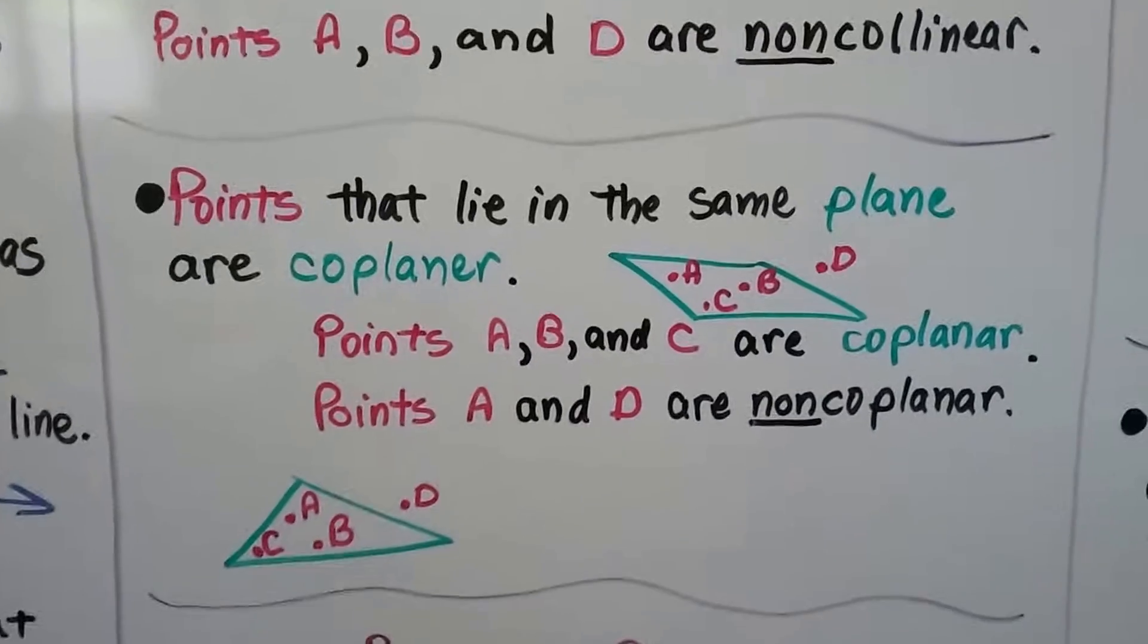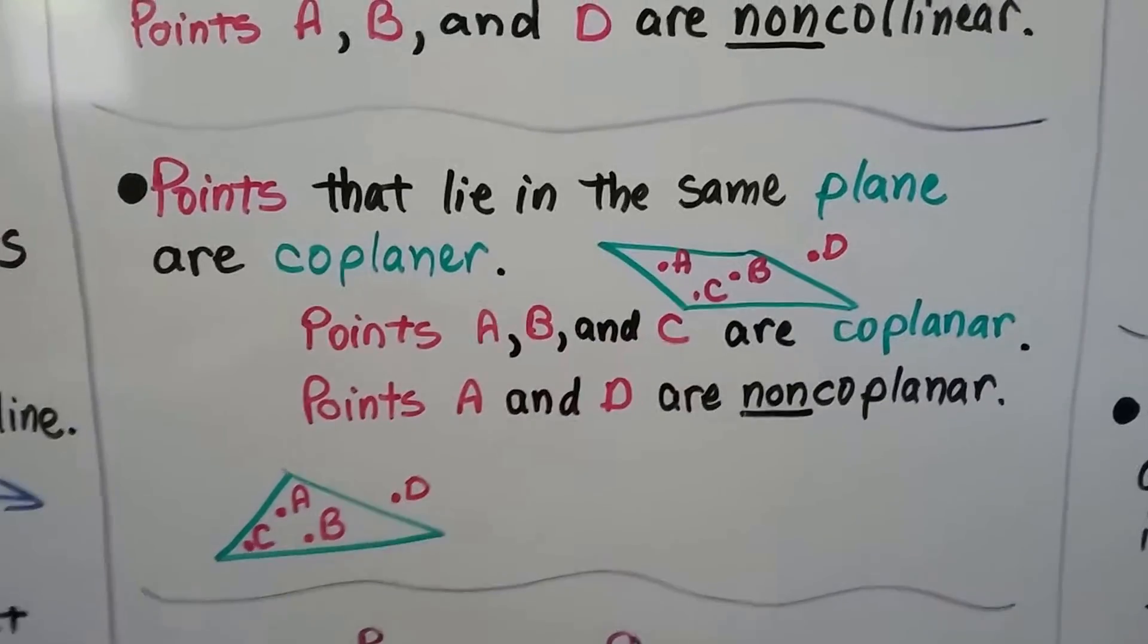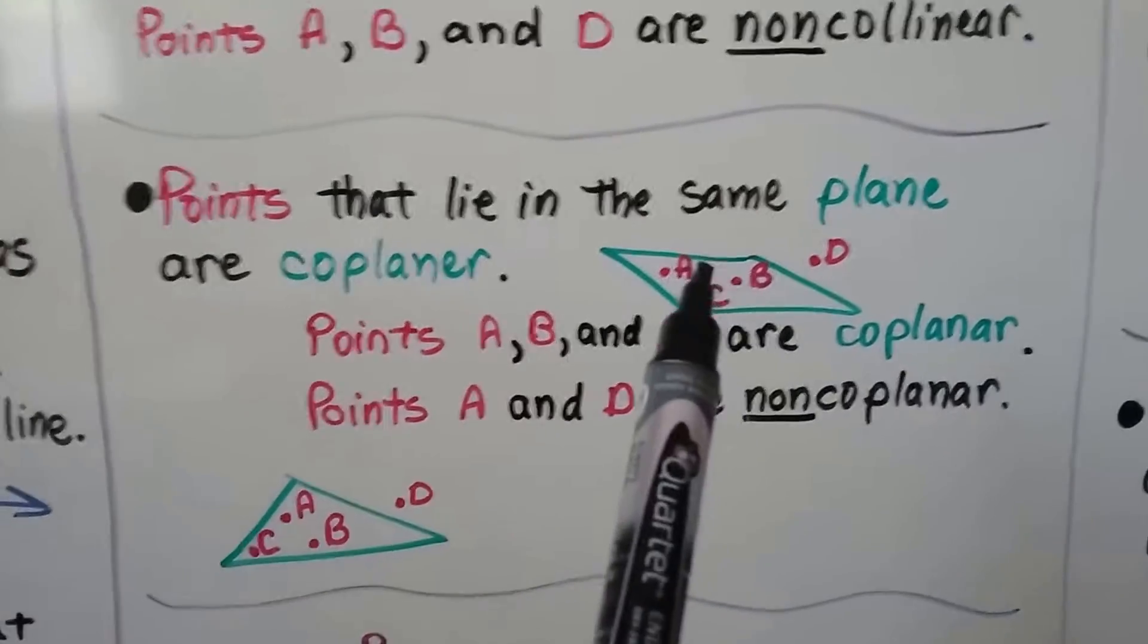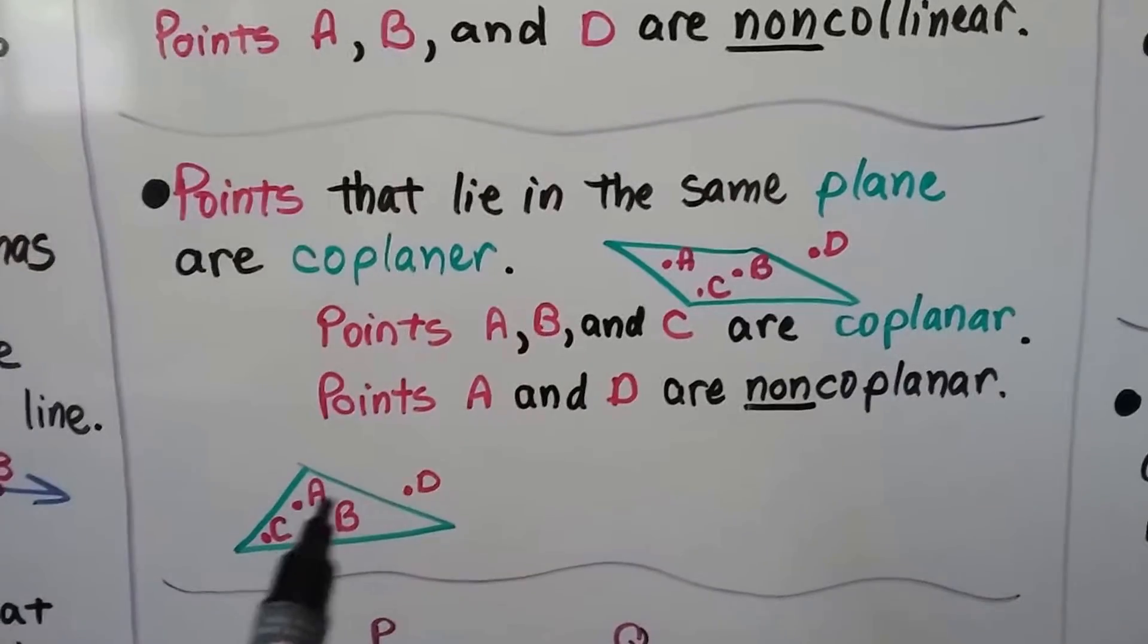Points that lie in the same plane are coplanar. Points A, B, and C are coplanar. Points A and D are non-coplanar.